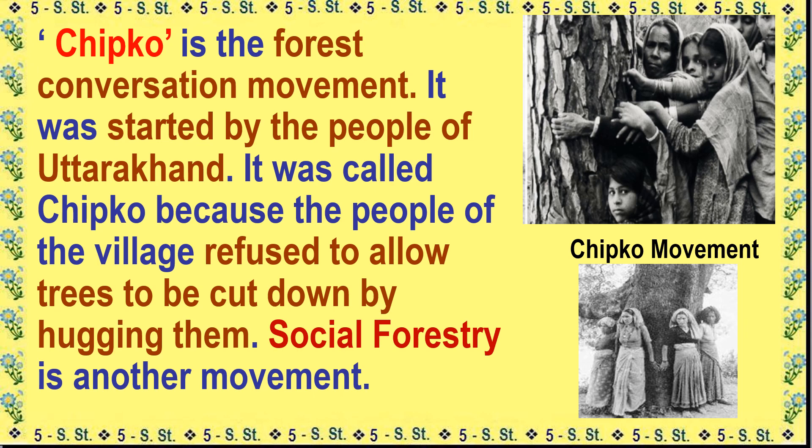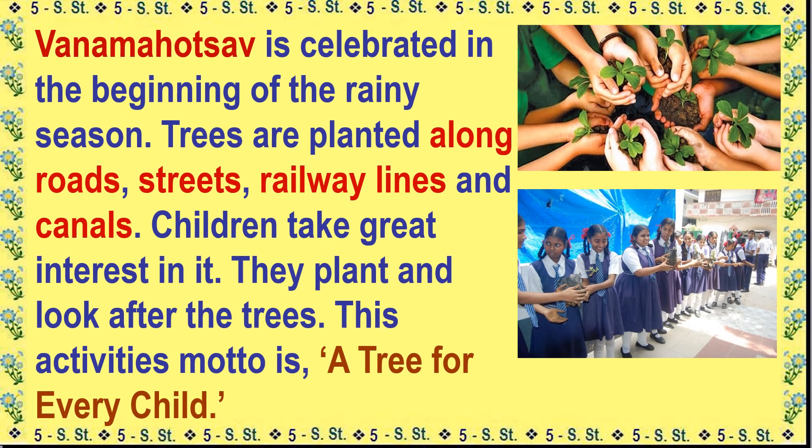Social forestry is another movement. Vana Mahotsav is celebrated in the beginning of the rainy season. Trees are planted along roads, streets, railway lines and canals. Children take great interest in it — they plant and look after the trees. This activity's motto is 'a tree for every child.'